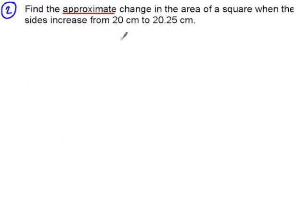In our second example, we want the approximate change in the area of a square when the sides increase from 20 to 20.25. So we've got the area of a square, which is x squared if we say that x is the side length.